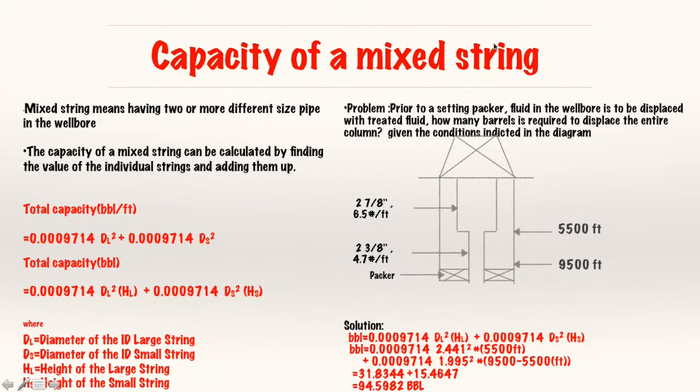Now, capacity of a mixed string. This just means having two or more different size pipes in the wellbore. It can be calculated by finding the individual strings and adding them up together. So, if I want to obtain my total capacity of a mixed string, we've already discussed what these mean in the first video, diameter of the small, of the large, cylinder of the large string, and diameter of the small string. And we know that this represents ID. Or, let's say, if we had a hole, then it would be the diameter of a hole. But in most occurrence, if you're dealing with tubing and casing, this would be ID. So, I add my total capacity together, I would multiply by my height of my large, my height of my small, and I'll obtain my answer.